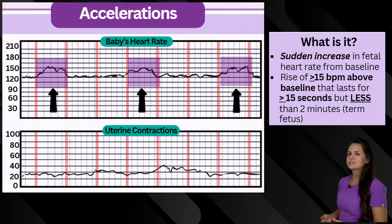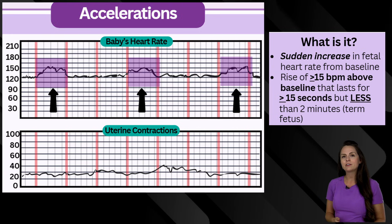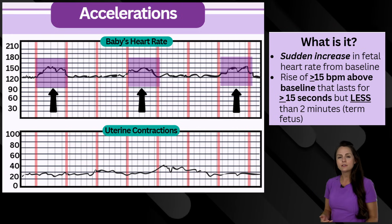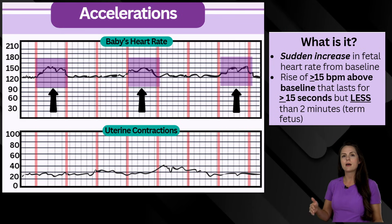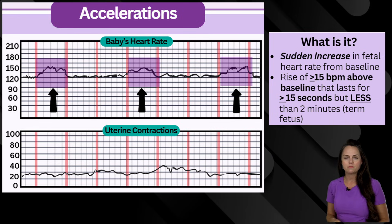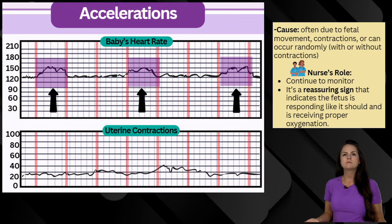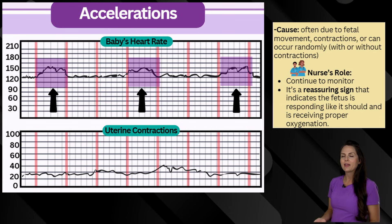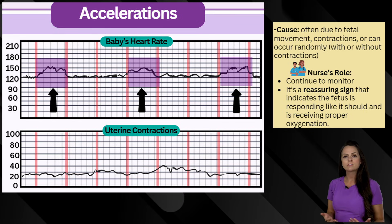First up are accelerations. The word acceleration means an increase in rate, and that's what we're talking about with our baby. This is a temporary increase in the fetus's heart rate. For a term fetus, this is a heart rate greater than 15 beats per minute above its baseline for at least 15 seconds but no more than two minutes. This can happen at any time — typically caused by the fetus moving or contractions. There are no interventions needed. This tells us our baby is healthy, responding like they should, and getting proper oxygenation.